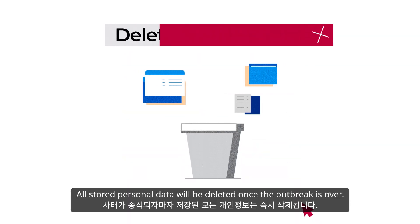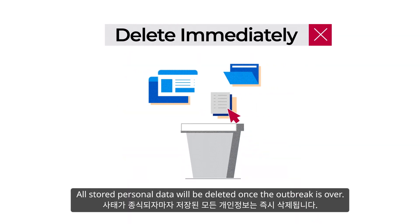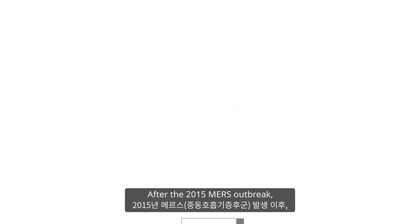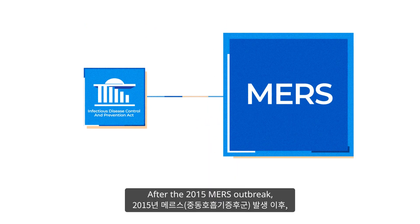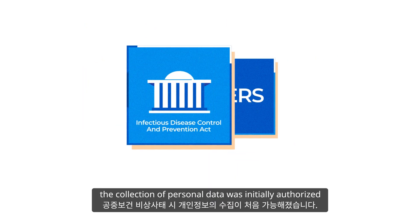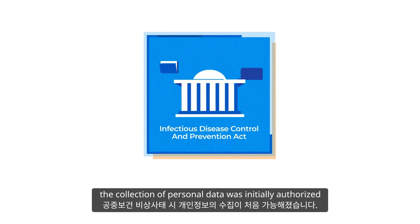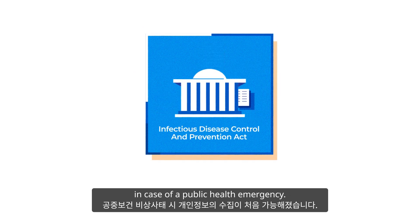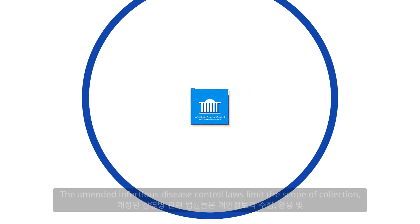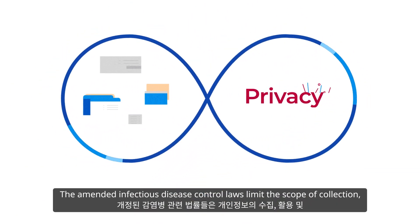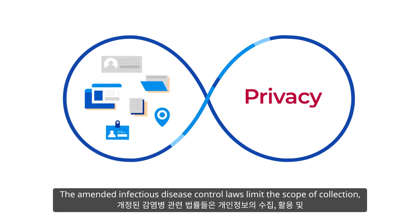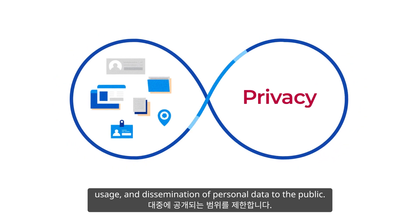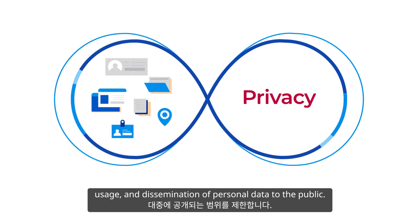All stored personal data will be deleted once the outbreak is over. After the 2015 MERS outbreak, the collection of personal data was initially authorized in case of a public health emergency. The amended infectious disease control laws limit the scope of collection, usage, and dissemination of personal data to the public.